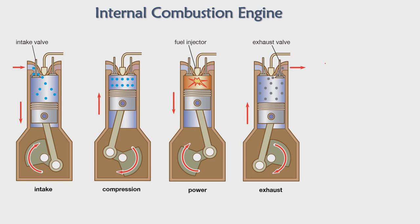When we see any ad about lubricants, they show this type of animation. This is the main component in the internal combustion chamber — where the entire combustion takes place. We have one piston moving up and down in the cylinder. We have a small shaft that rotates, and with that rotation, the piston moves up and down. There are two valves: one intake valve and one exhaust valve.